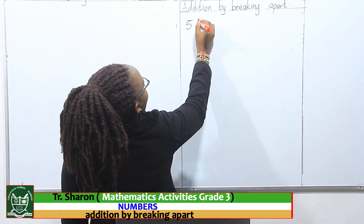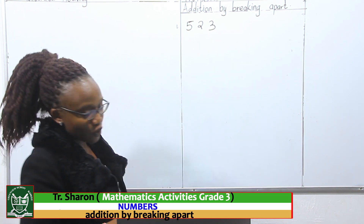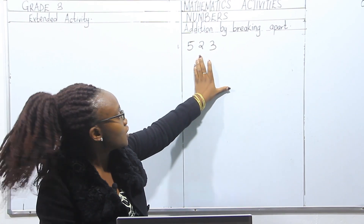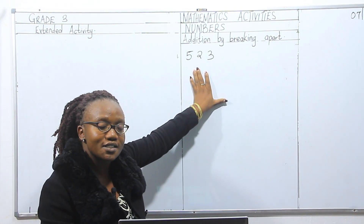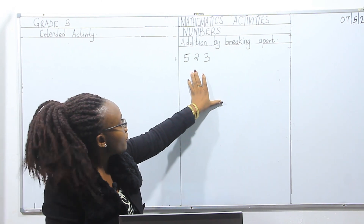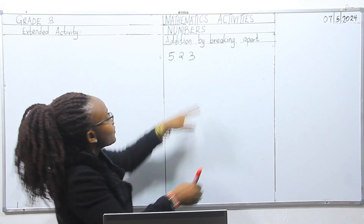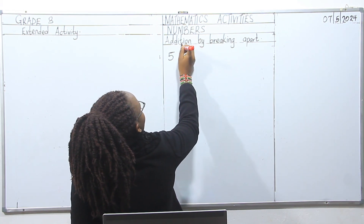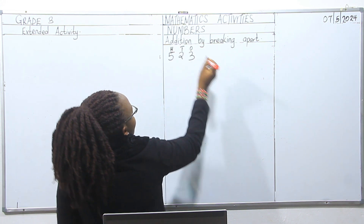Let us remind ourselves of how we did this last time. We have a number like 523. We are going to break this number into hundreds, tens, and ones. As I always say, when we are breaking numbers, we start from our left side — here we have ones, here we have tens, and here we have hundreds.